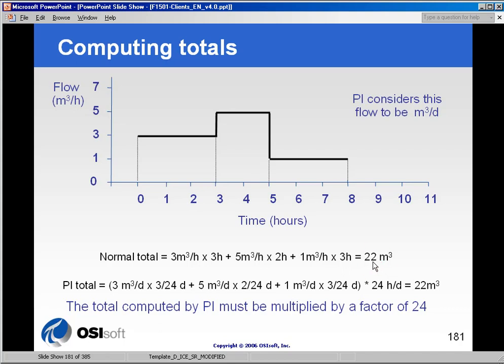However, because PI assumes units per day, we multiply each of those calculations by something over 24. And so, we get the result at the end, which is not quite correct. We have to multiply by 24 because our units, our measuring unit measure, is something per hour. So, we multiply by 24, and that gives us the correct amount.